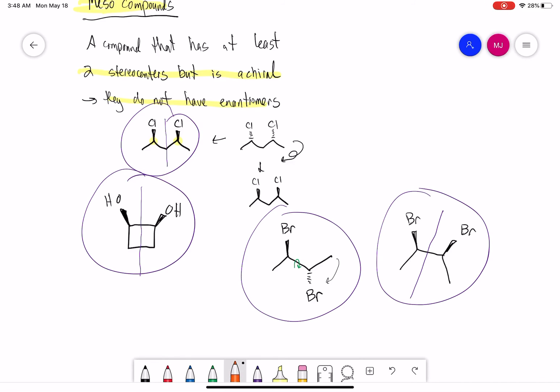In a chain of an odd number, the stereocenters are going to be exactly the same as meso. Rings are pretty easy to see because they're going to have the same.